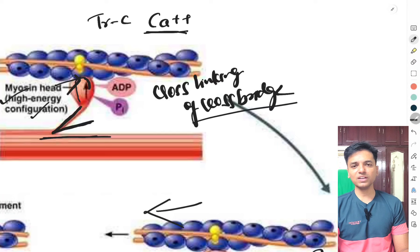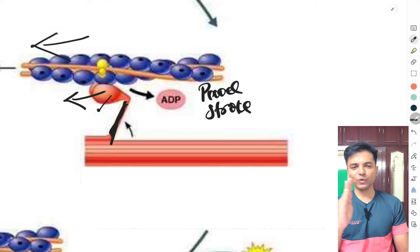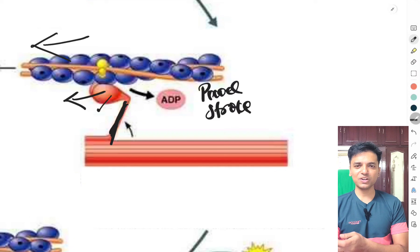As soon as the cross bridge is linked to the active binding sites on actin, a conformational change occurs in the head of the cross bridge, causing it to tilt towards the center of the sarcomere. Because the head is attached to actin, this tilting pulls the thin filament towards the center of the sarcomere. This is the power stroke, which is responsible for the sliding of the thin filament over the thick filament.